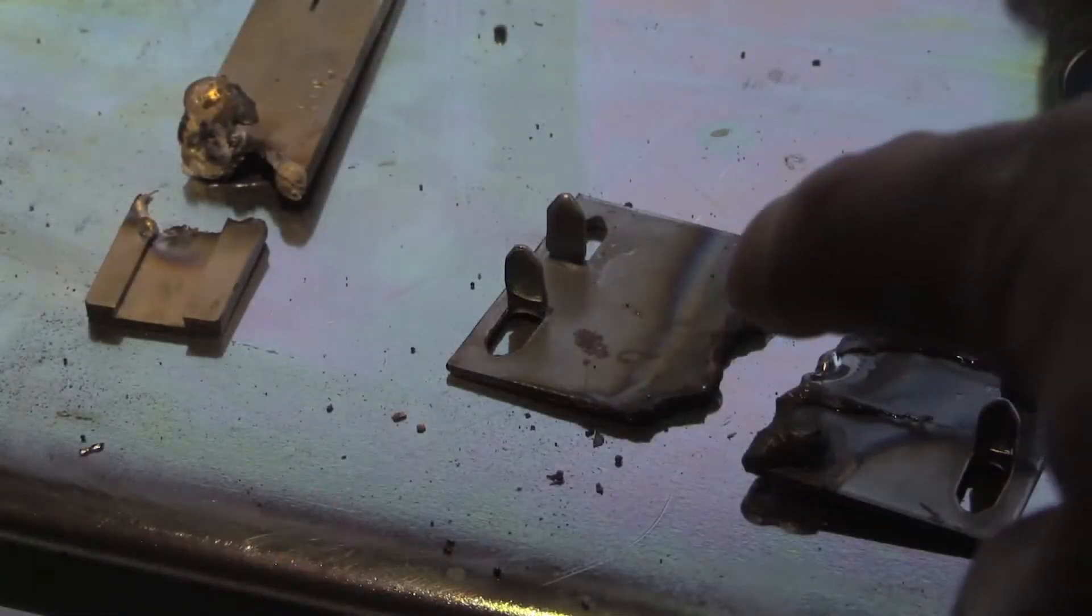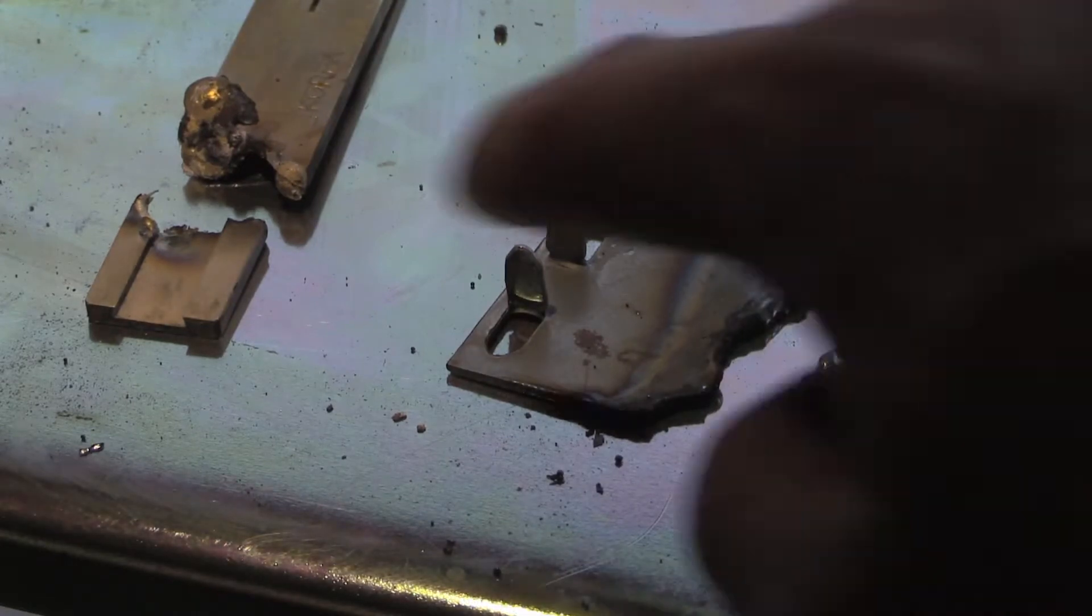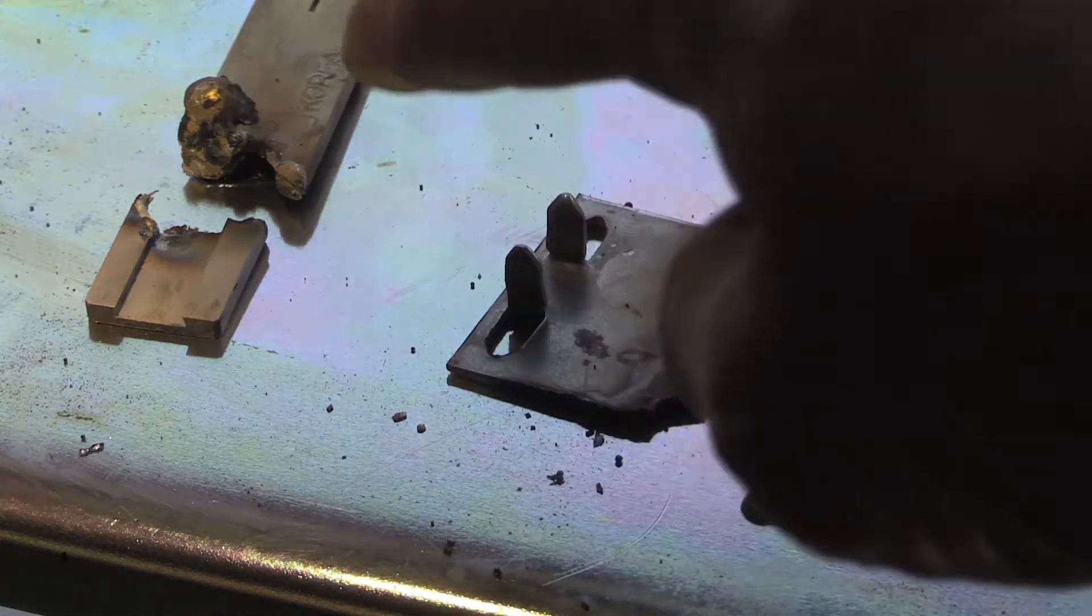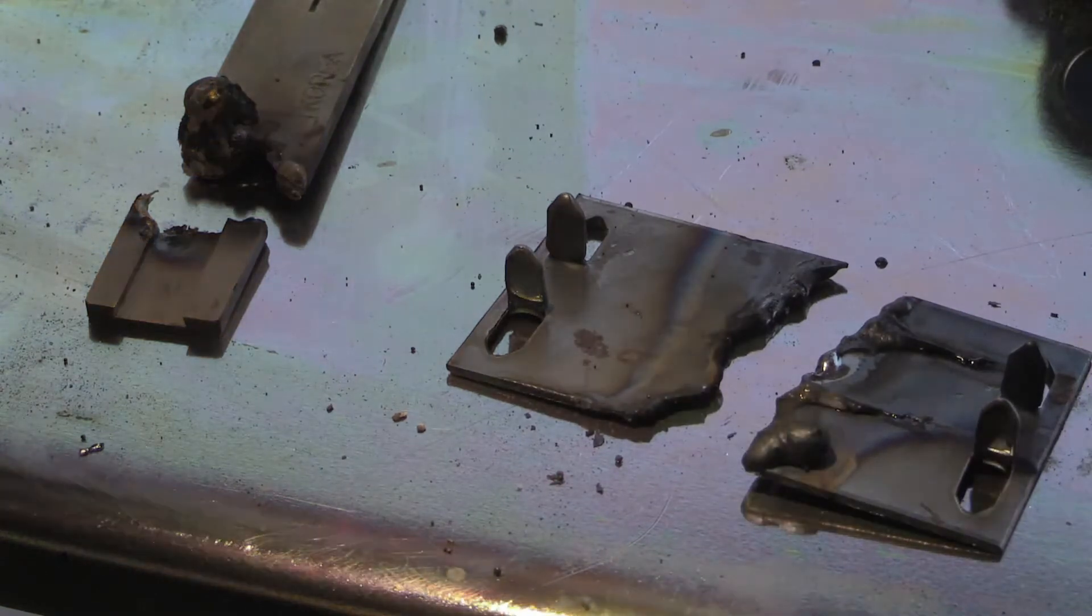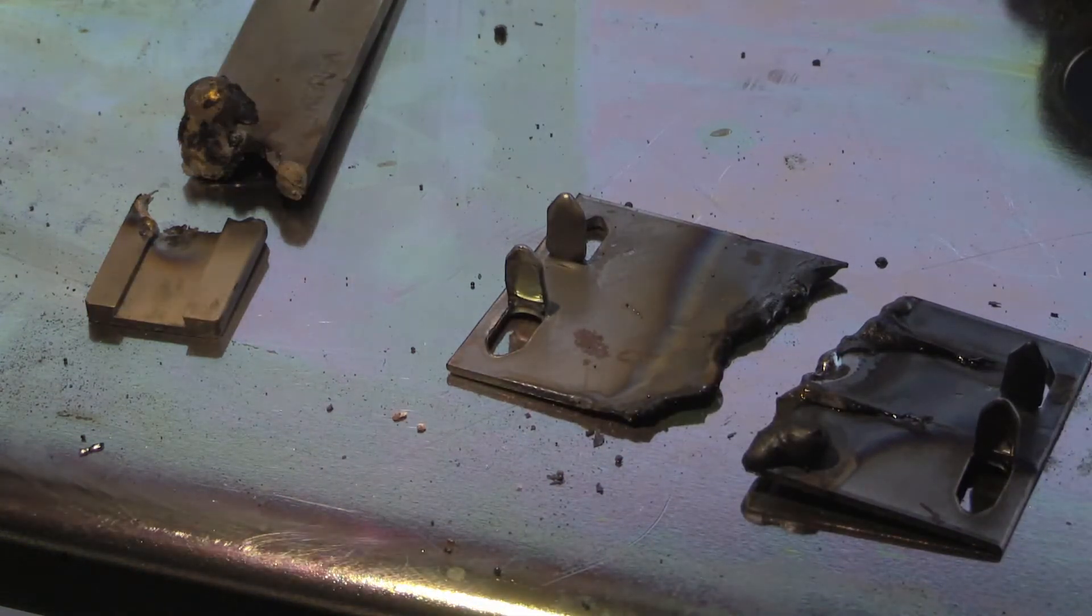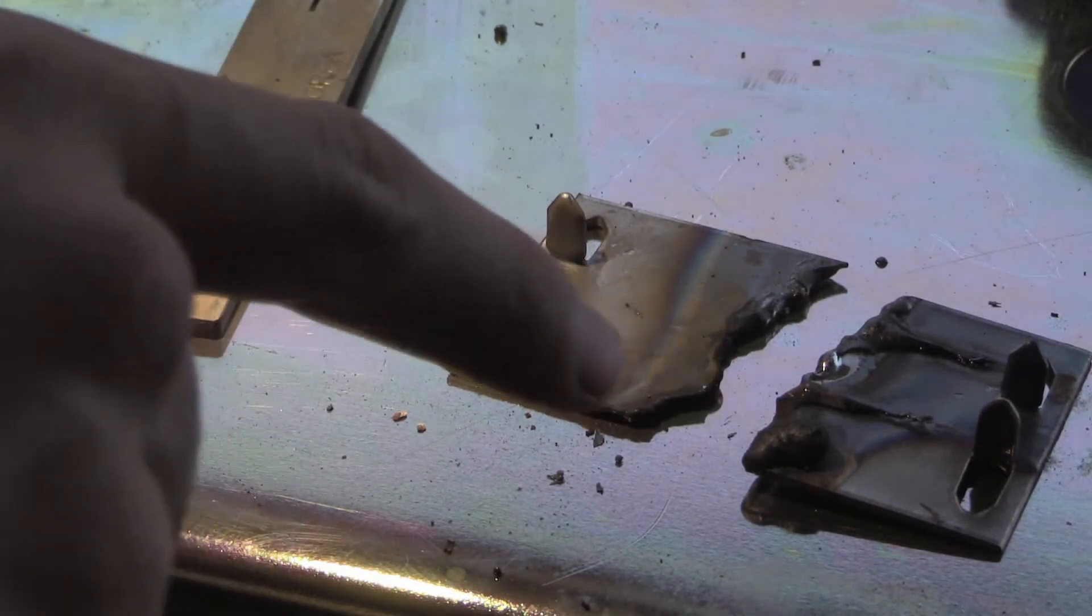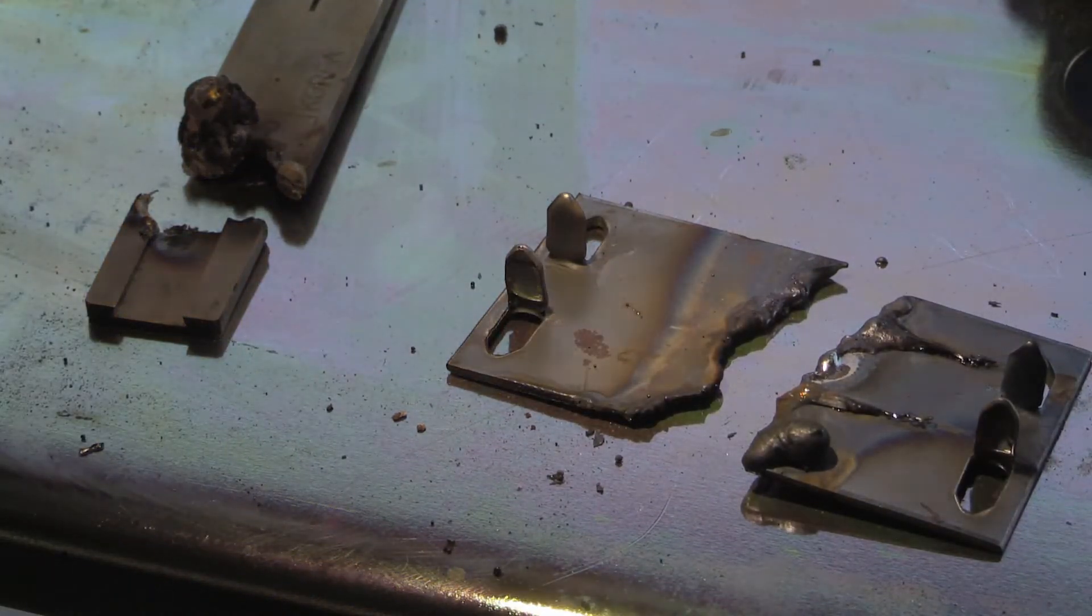So, not only does cutting metal with an arc welder not work very well, as you can tell by these very rough cuts, but it's also slow and wastes welding rods. So I guess this was a fun experiment, but you really shouldn't consider this as a practical way to cut metal.